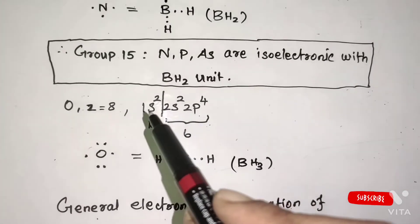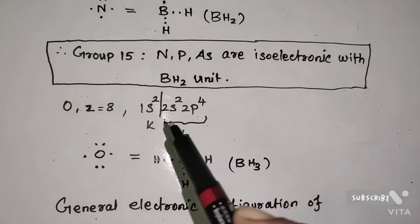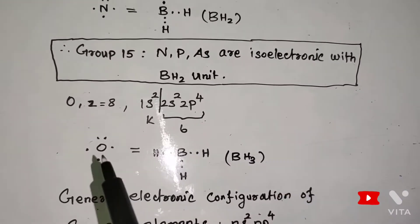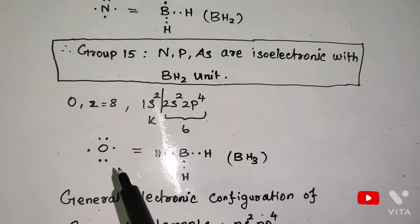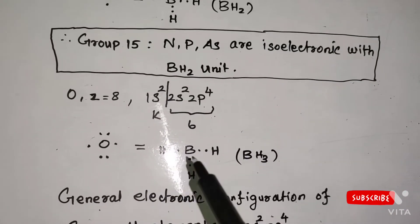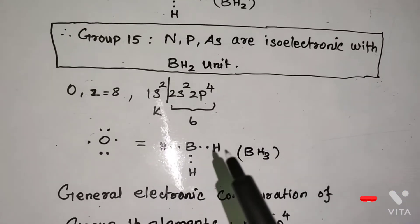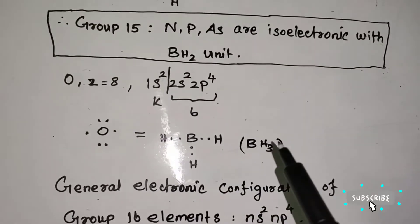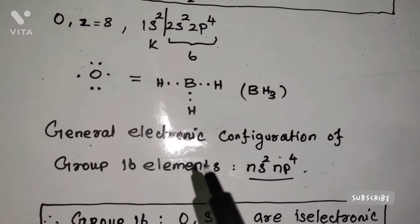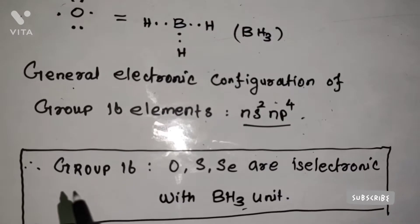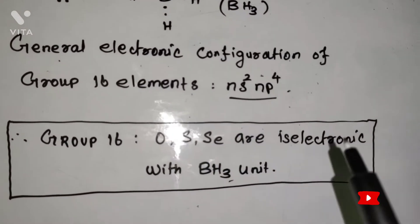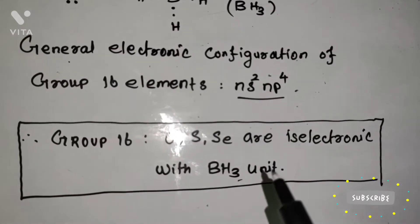The atomic number of oxygen is 8, with electronic configuration 1s², 2s², 2p⁴. Six electrons are present in the outermost orbital. These 6 electrons of oxygen are isoelectronic with the 6 electrons of the BH3 unit. Therefore, oxygen is isoelectronic with BH3. The general electronic configuration of group 16 elements is ns² np⁴. Therefore, group 16 elements — oxygen, sulfur, and selenium — are isoelectronic with the BH3 unit.